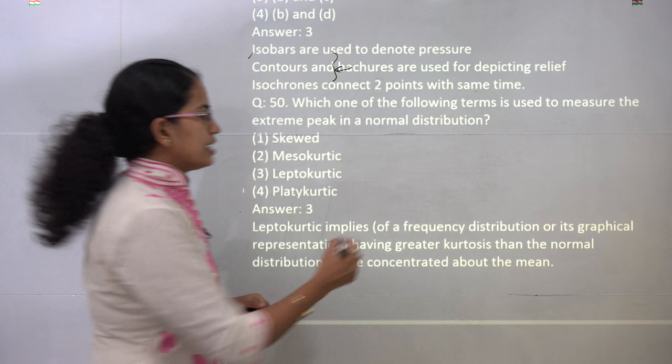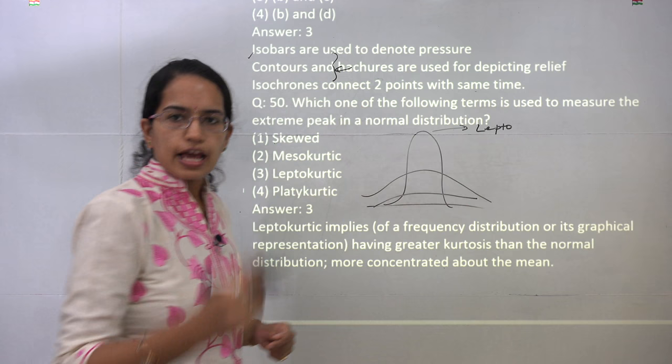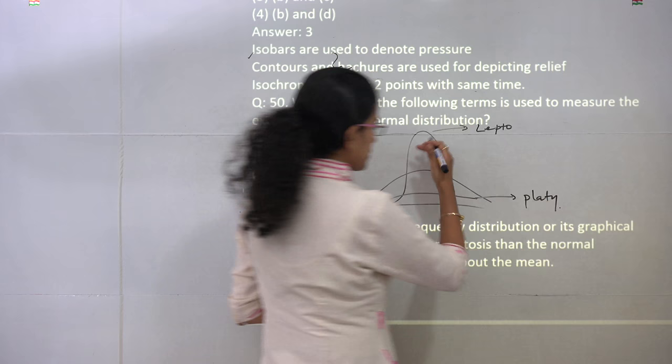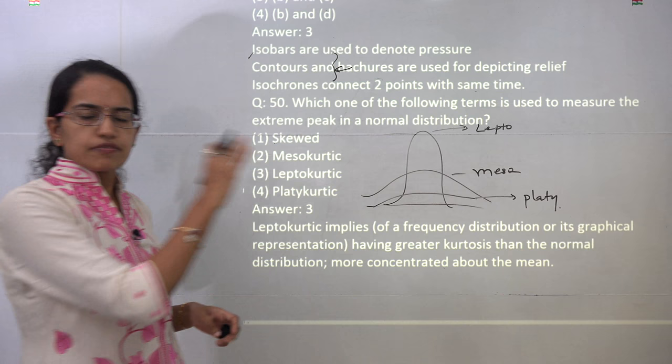The last question: a very extreme peak of a normal distribution curve is known as what? When the peak is extreme, it is known as leptokurtic. When it is flatter, it is known as platykurtic, and when it is in between the two, we call it mesokurtic. This is a part of kurtosis, which is available in the postal course material in the third part of the book.